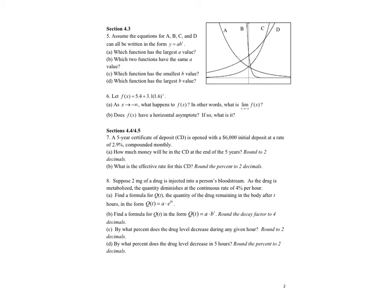On number 5, we're looking at this graph here, and the first question is which function has the largest a value. First, we need to understand what the different parts of a times b to the t are. This is the initial value, and if I'm looking on a graph, that's going to be the y-intercept.